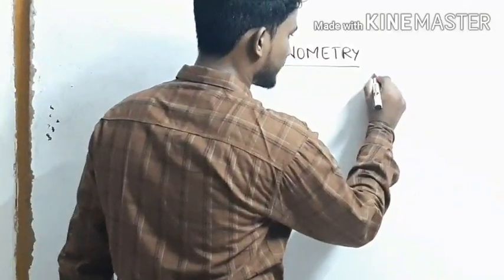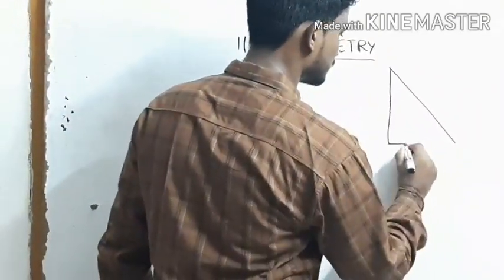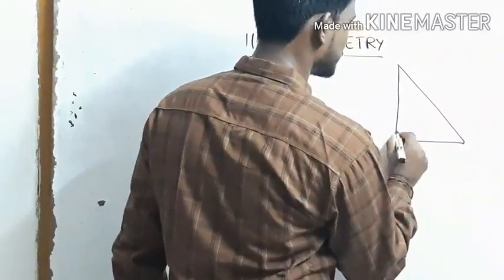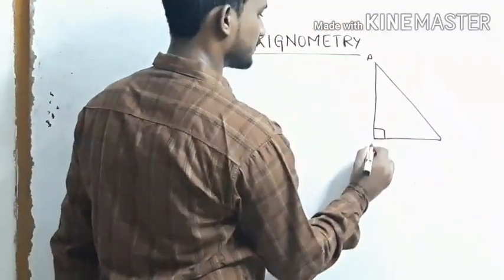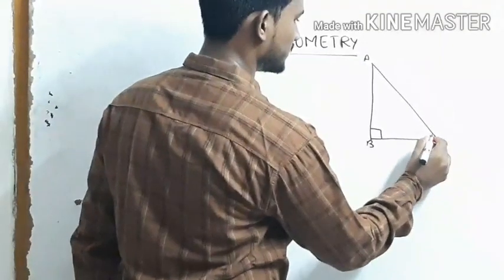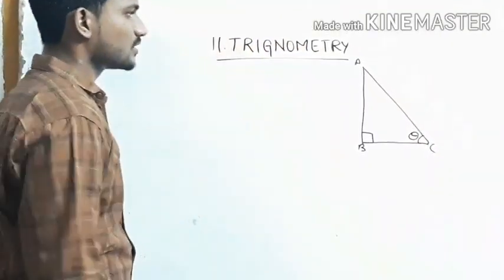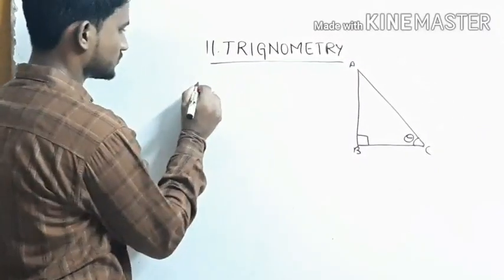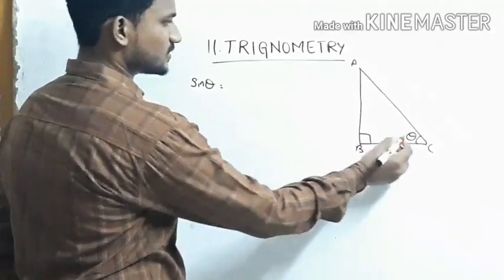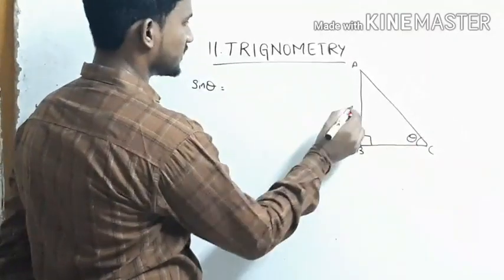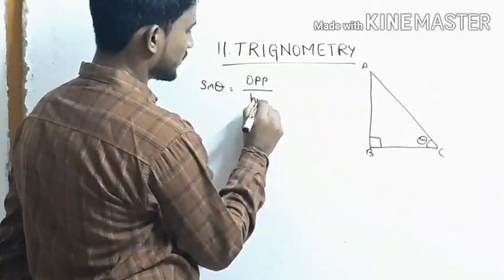First we can draw a triangle. This is a right angle triangle with vertices A, B, C. You can imagine theta at one angle. First we want to find sin theta. Sin theta equals to opposite by hypotenuse.